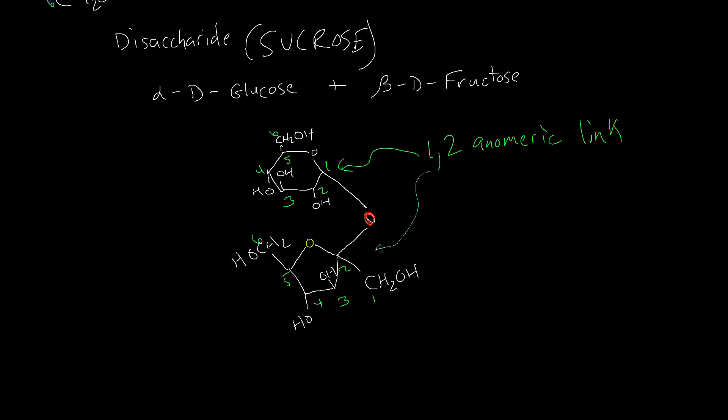And that's going to be 1-2 anomeric link because the oxygen, that red oxygen, that's the one carbon in the glucose, is the same oxygen that's attached to the two carbon in the fructose. So that's where you get your 1-2 anomeric link.